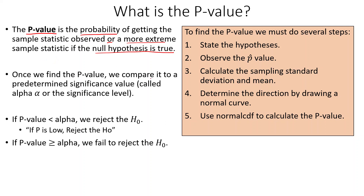What happens is we assume the null hypothesis to be true. We make a normal sampling distribution around the null hypothesis. We figure out how far away our sample statistic is and what's the probability of being at that point or farther away. Once we find the p-value, we compare it to a predetermined significance level called alpha — usually 5%, or 0.05. If p is less than alpha, we reject the null hypothesis. If p is greater than or equal to alpha, we fail to reject — we just don't have enough evidence.